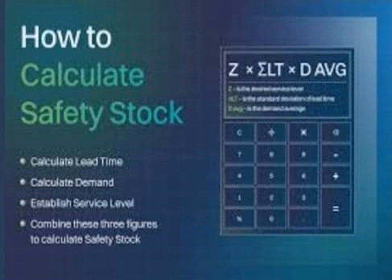Now let's find out the relationship between these two by using the safety stock formula. Safety stock equals Z multiplied by σ_LT multiplied by D. Z refers to the desired service level factor. σ_LT refers to the standard deviation in lead time. And D is the average demand. We can determine safety stock by multiplying these three figures after calculating lead time standard deviation, average demand, and service level.